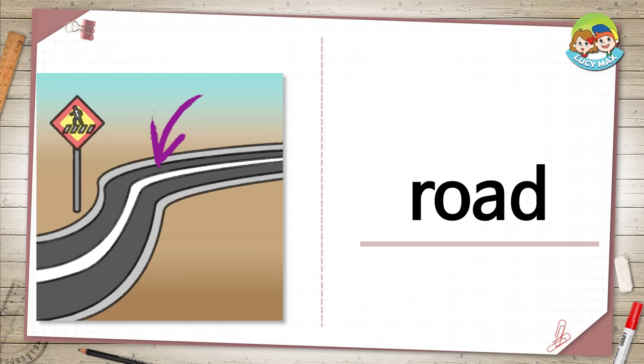The black and white part in the picture is a road. Cars and bikes go on it. What else goes on a road?